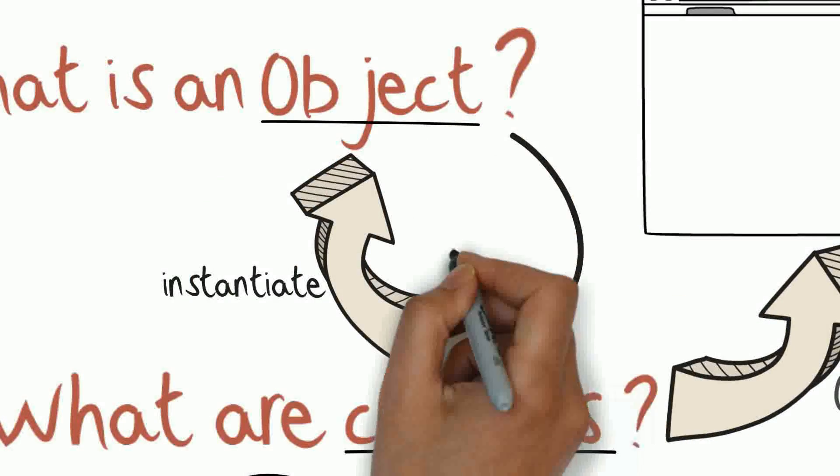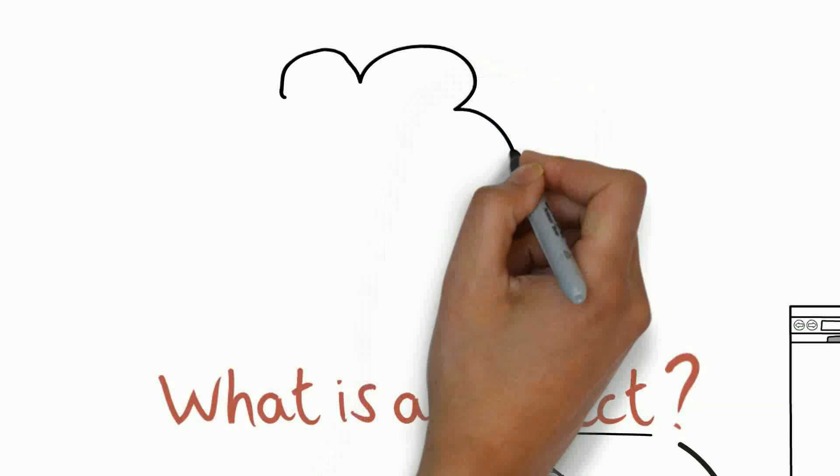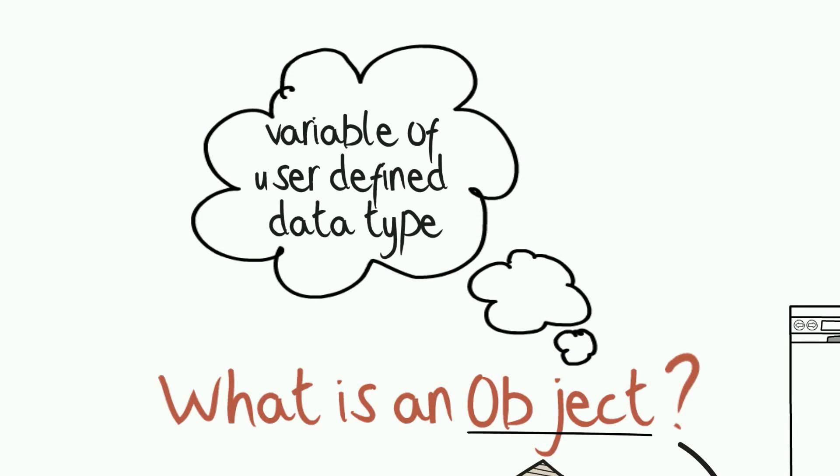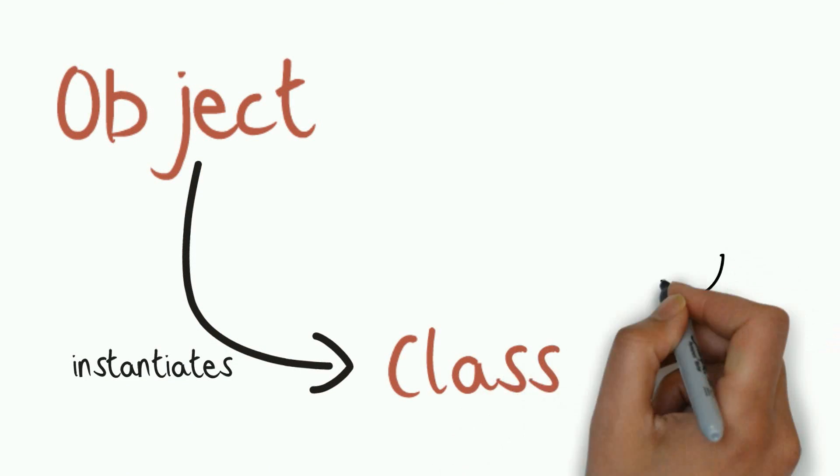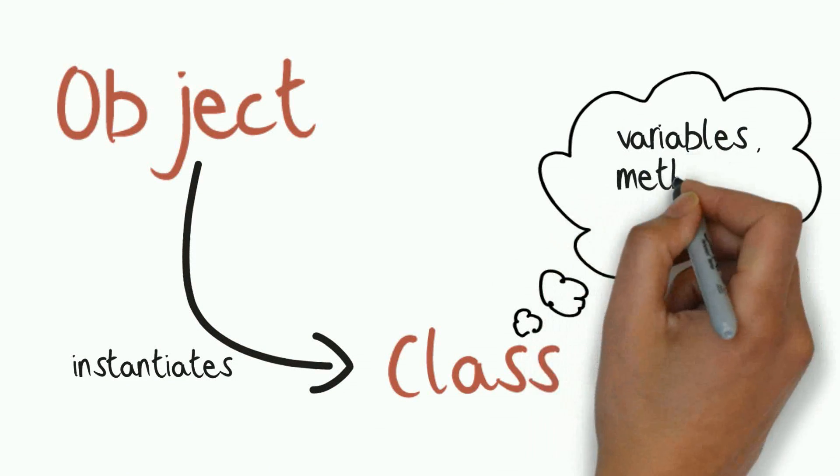An object is an instance of a class. That is, an object can be considered as a variable of a user-defined data type. Once an object instantiates a class, it holds all the characteristics associated with the class.